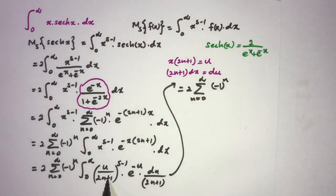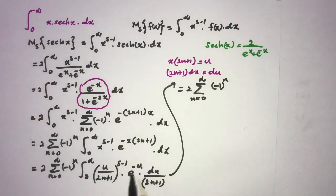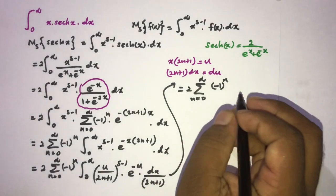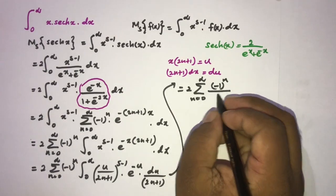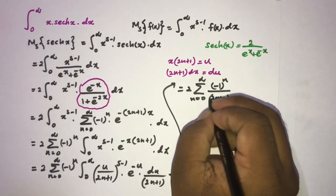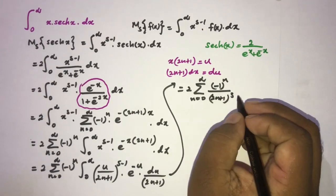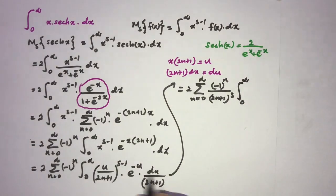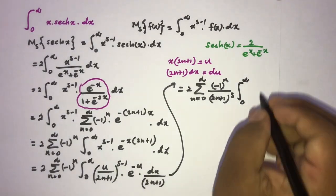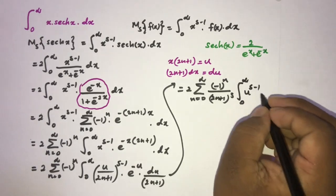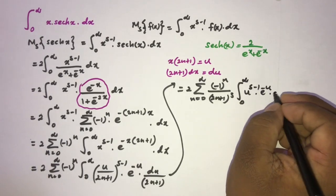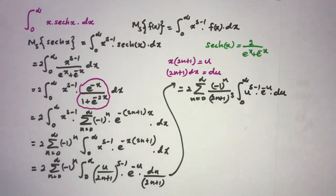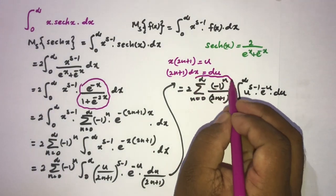Simplifying, the factors of (2n+1)^{s-1} and (2n+1) in the denominator combine to give (2n+1)^s in the denominator. So we have 2 times sum_{n=0}^{∞} (-1)^n / (2n+1)^s times the integral from 0 to infinity of u^{s-1} e^{-u} du.